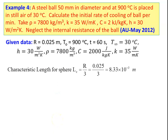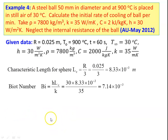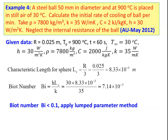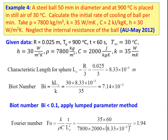Calculate the characteristic length LC for a sphere — a steel ball is a sphere. LC equals R by 3, which is 0.025 divided by 3, equal to 8.33 × 10⁻³ meter. Biot number equals H·LC divided by K: 30 into 8.33 × 10⁻³ divided by 35 equals 7.14 × 10⁻³. The Biot number is less than 0.1, so we may apply the lumped parameter method. Now we calculate the Fourier number: Fo equals alpha·T divided by LC². Alpha equals K divided by rho·C. Substituting all values: 35 into 60 divided by 7800 into 2000 into (8.33 × 10⁻³)², equal to 1.94. So Biot number is 7.14 × 10⁻³ and Fourier number is 1.94.